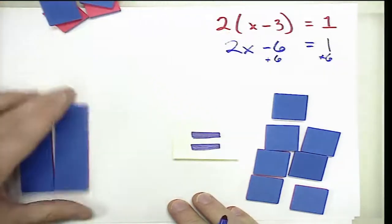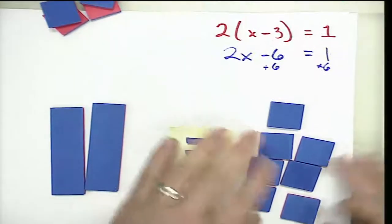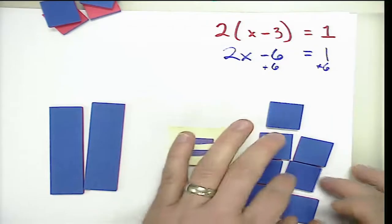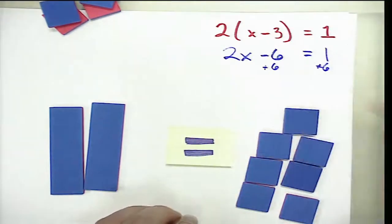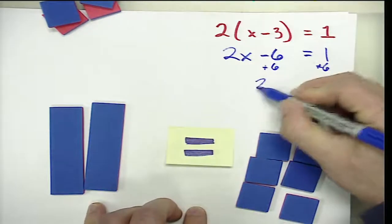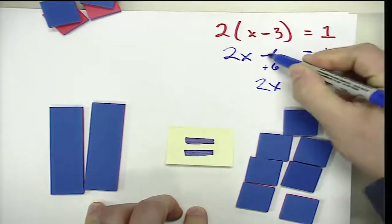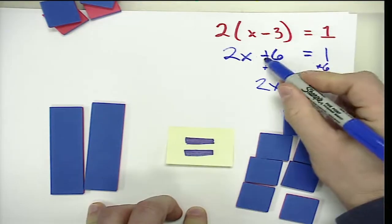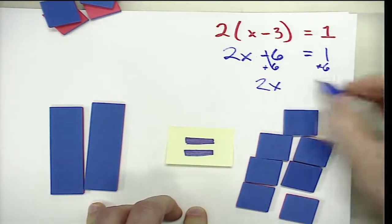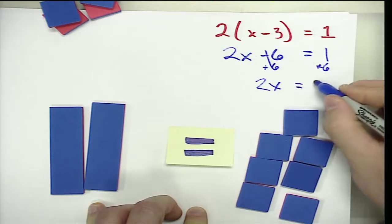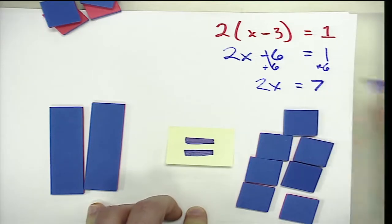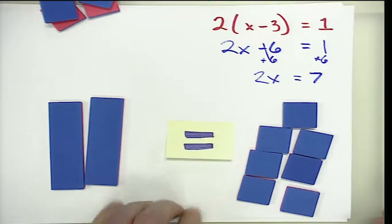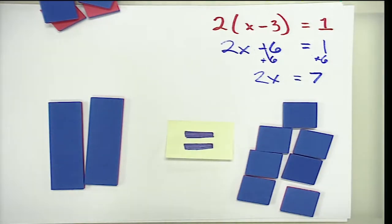On the left side we now have zero pairs, so the negative six and positive six cancel out. On the right side we just have more positives added to our one. Interpreting the model, the negative six and positive six cancel, so we're left with two X equivalent to seven.